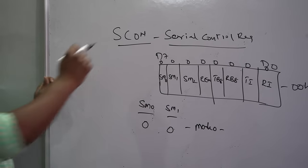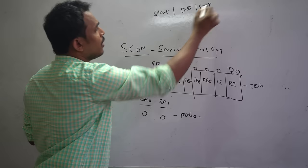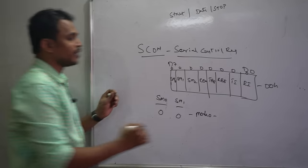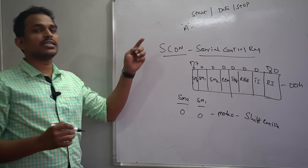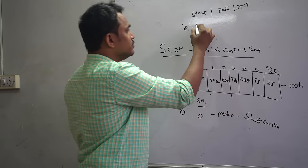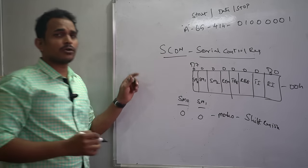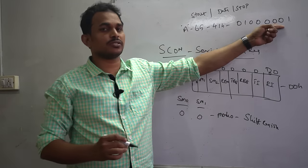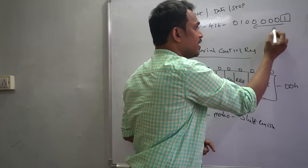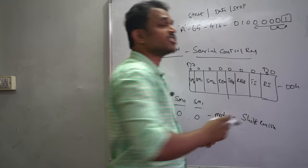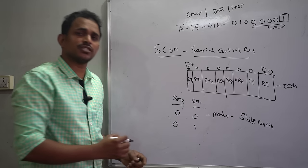In Mode 0, data is framed with a start bit, data bits, and a stop bit, and transmission uses a shift register process — data is sent bit by bit from LSB to MSB. For example, the ASCII value of character 'A' is 65 decimal, or 41H, which is 01000001 in binary. Each bit must be shifted out one at a time during transmission.